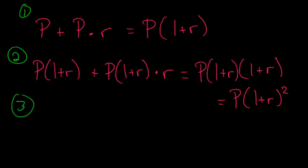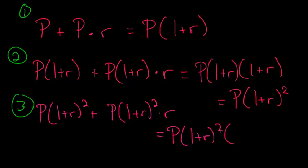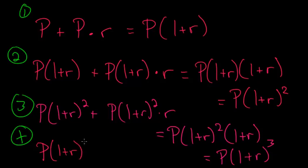For the third period, we now consider this P times 1 plus R squared as the new principal. So we start with P times 1 plus R squared, and we add to it this new principal, P times 1 plus R squared, multiplied by the rate. And now we can factor out this P times 1 plus R squared from each term. So we have P times 1 plus R squared, and here I'm left with a 1, and here I'm left with plus R. And I think now it becomes clear what the pattern will be, since this simplifies to P times 1 plus R to the third power. So if we look at the T period, then our formula will look like P times 1 plus R to the T power.